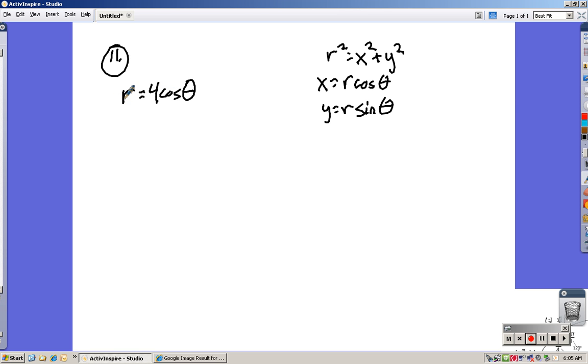And I want this to be r times a trig function or r squared. So I think what I can do is I can make that happen. I'll multiply both sides by r, because if I do that, notice over here I have an r squared. Over here I have a 4 times r times cosine theta.